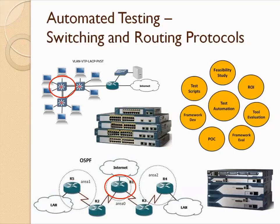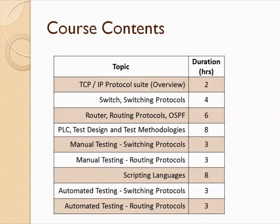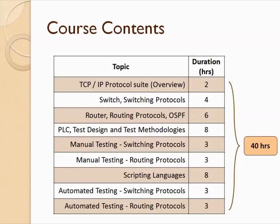If you go for an interview, you can confidently say you know routing and switching features, worked on Cisco products, executed a manual testing project using proper test methodologies, and can automate it as well. Your knowledge is complete — the only thing left is to keep practicing, doing projects, and covering as many protocols and as much latest technology as possible. The total course duration is 40 hours, offered on both weekdays and weekends, completing in four to five weeks.